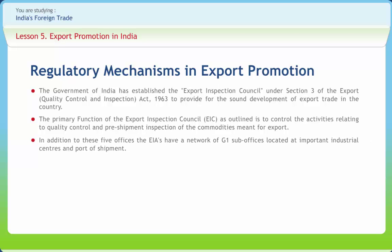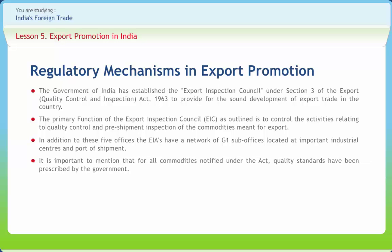In addition to the five main offices, the EIAs have a network of sub-offices located at important industrial centers and ports of shipment. These EIAs have well-equipped laboratory facilities for testing various export products and also undertake inspection on a voluntary basis when desired by foreign buyers. The government of India has also recognized 21 private inspection agencies and seven government inspection agencies to supplement quality certification work. Under the Act, 15 agencies have reportedly been recognized for fumigation of export cargo. For all commodities notified under the Act, quality standards have been prescribed by the government.